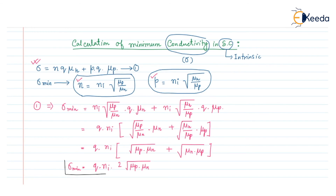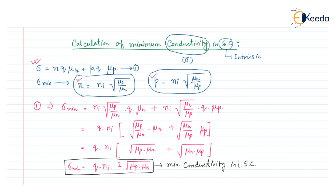This equation gives the minimum conductivity value of the intrinsic semiconductor. In this way we can calculate the minimum conductivity value for an intrinsic semiconductor. This equation of minimum conductivity is also applicable to both n-type and p-type semiconductors.